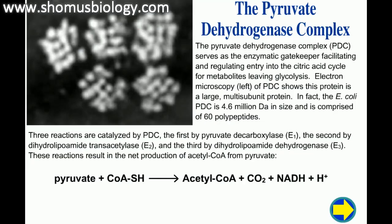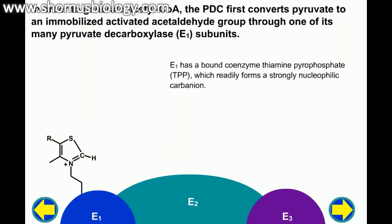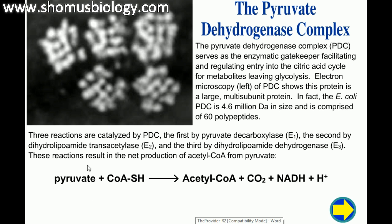Now we'll see an animated tutorial on the pyruvate dehydrogenase complex (PDC). It involves three separate enzyme complexes: E1, or pyruvate decarboxylase; E2, or dihydrolipoamide transacetylase; and E3, or dihydrolipoamide dehydrogenase. In the overall reaction, pyruvate and coenzyme A (CoA-SH) together form acetyl-CoA, releasing carbon dioxide from the pyruvate structure, and NAD+ is reduced to NADH + H+.